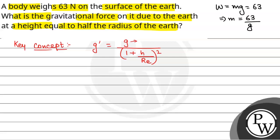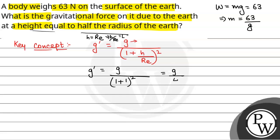Now, we will calculate for height equal to half the radius of earth. Sorry — h is equal to R_e divided by 2. So h by R_e will be equal to 1 by 2.